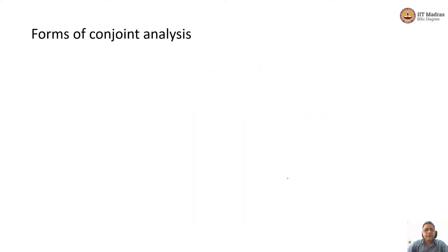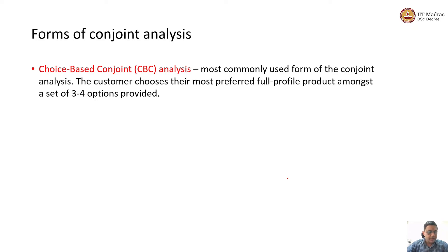Conjoint analysis is of various types, various forms. Let us quickly look at these types. Choice-based conjoint analysis is the most commonly used form, where the consumer is offered a set of three or four options and tells us which is the most preferred full profile product.